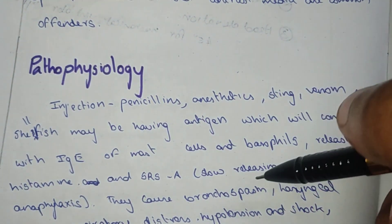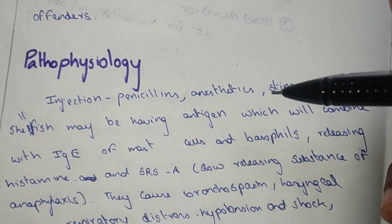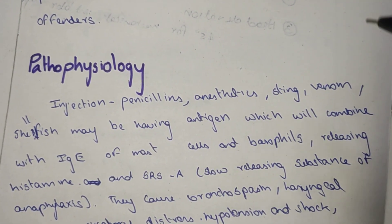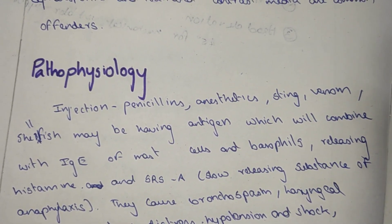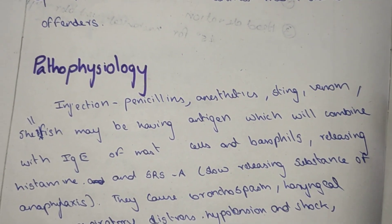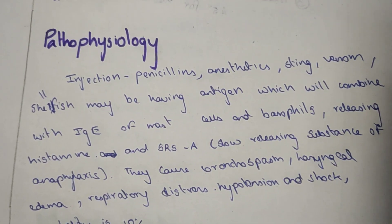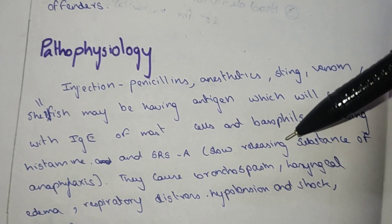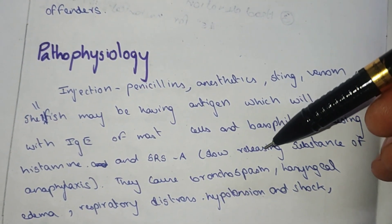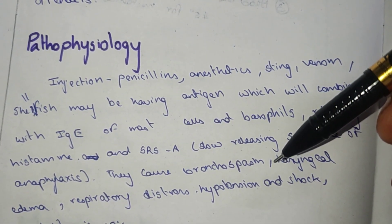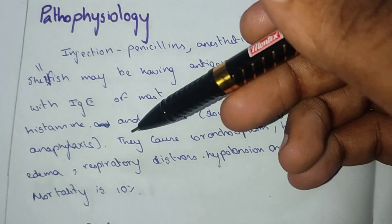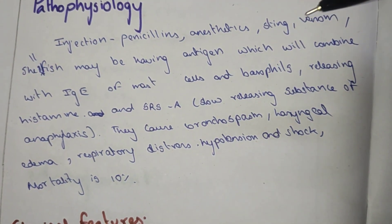IgE also triggers the release of SRSA — slow releasing substance of anaphylaxis. This leads to bronchospasm, bronchial constriction, laryngeal edema, and respiratory distress, resulting in hypotension, decreased blood pressure, shock, and a mortality rate of approximately 10%.